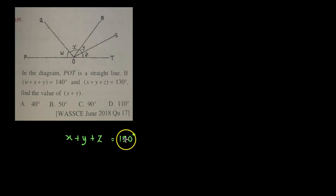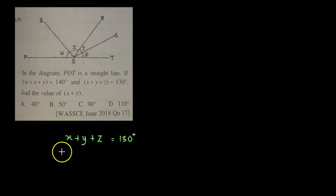This is a very strategic question — it seems difficult but is actually easy if you analyze the situation carefully. To find the value of X plus Y, we need to know the values of X and Y individually. From the question we know that X plus Y plus Z equals 130 degrees. Since POT is a straight line, all the angles subtending on the straight line must equal 180 degrees. Hence W plus X plus Y plus Z must equal 180 degrees.